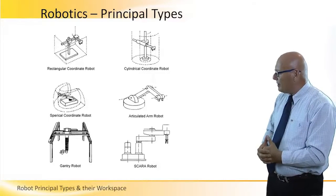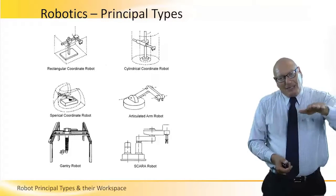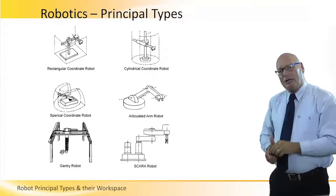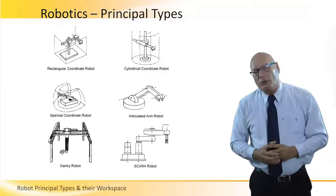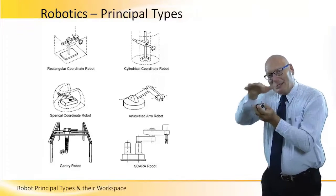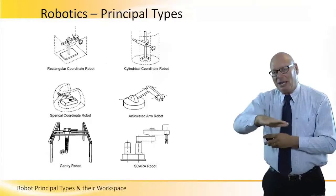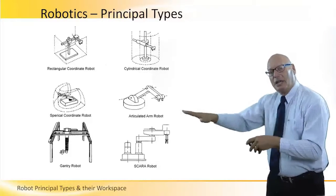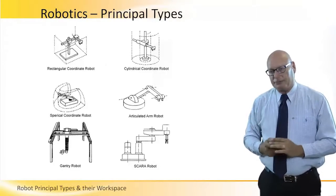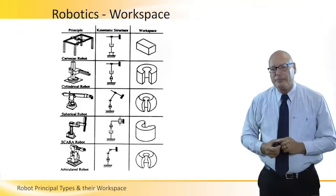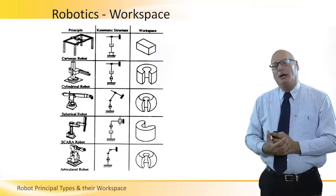The last type, shown in the bottom right, is the SCARA robot. It has a single axis of rotational degrees of freedom. We see two or three parts in the SCARA robot, each in a different plane but basically on the same axis at different heights. This allows it to create a cylindrical type of working envelope, but in a different fashion.